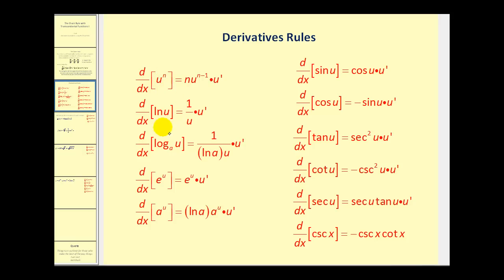If you look at the derivatives of all of these, you'll find a product where the first expression is the derivative of the outer function, and u prime is the derivative of the inner function. So identifying u is the key component to applying the chain rule properly. Let's go ahead and take a look at some examples.